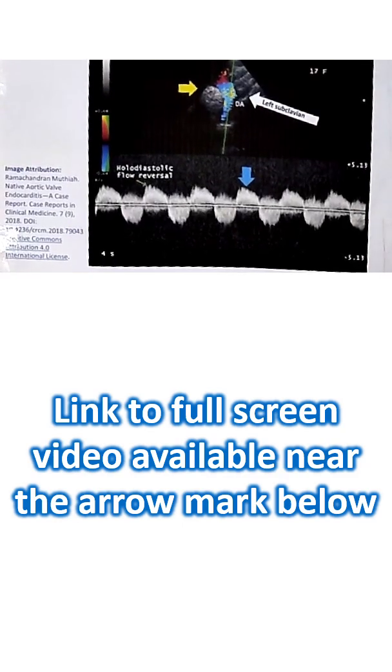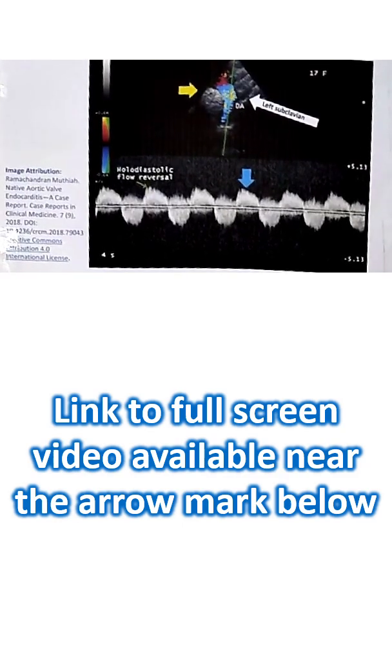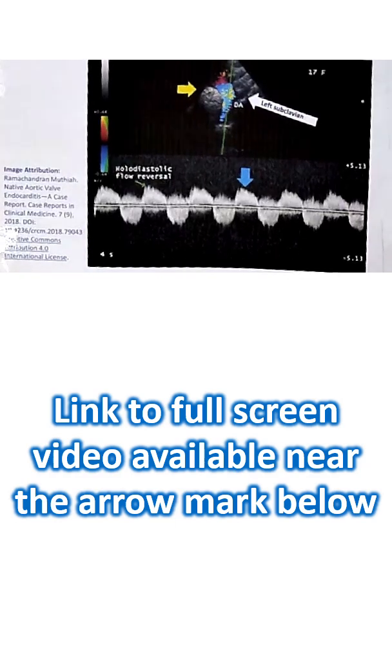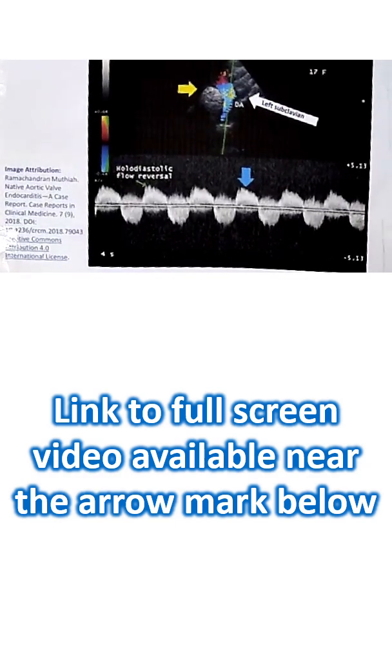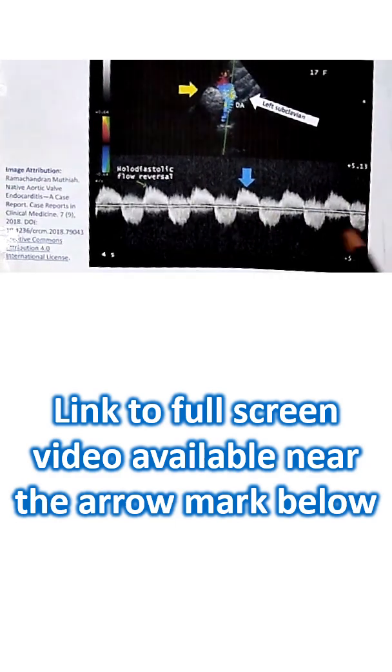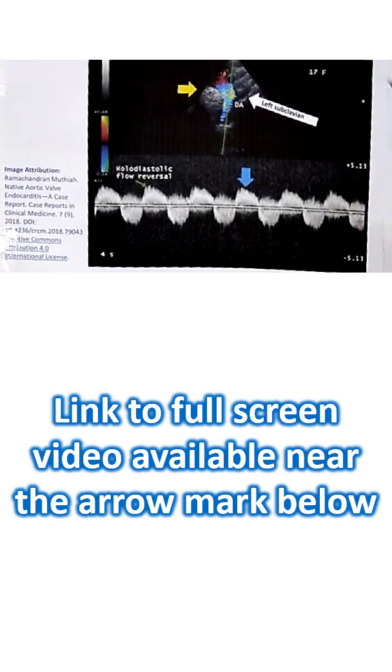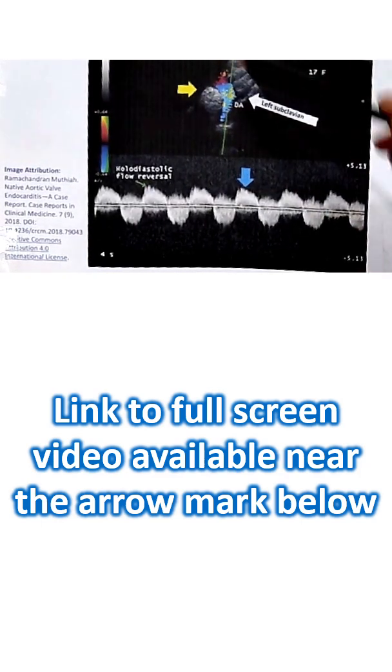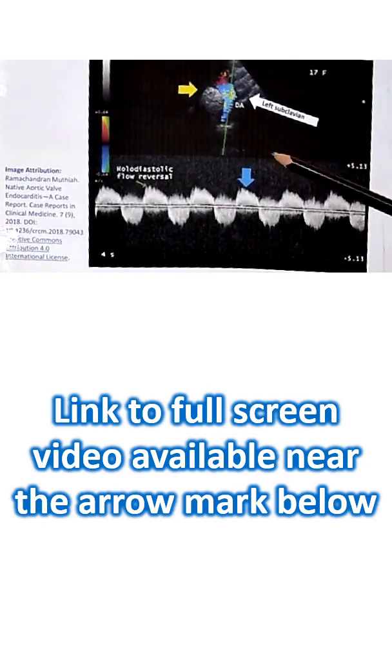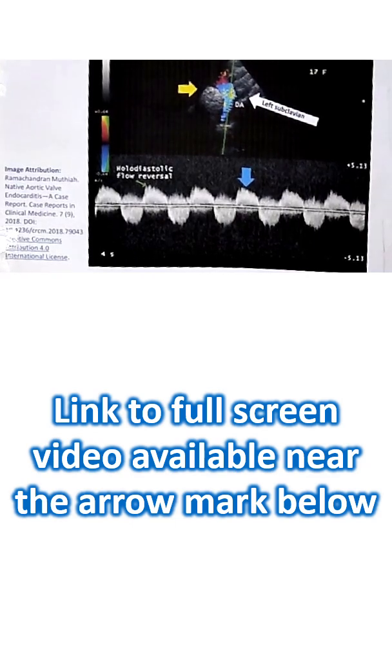Before going to other views in aortic regurgitation, I would like to show this image which is less often used, so it is worth learning. This is the suprasternal view. You are looking for the descending aortic flow reversal in aortic regurgitation.